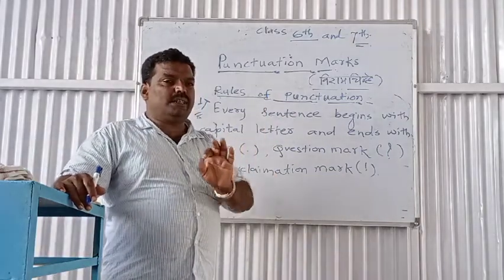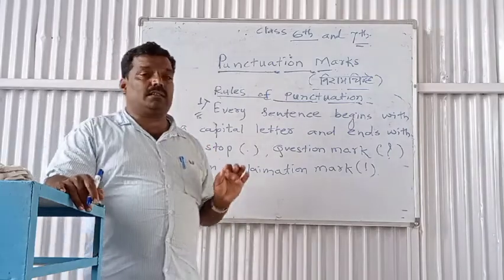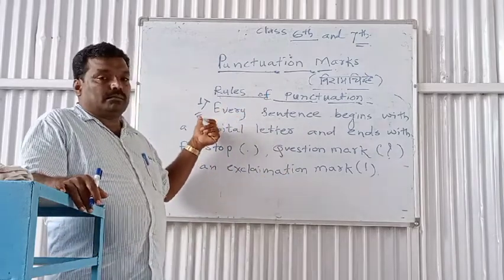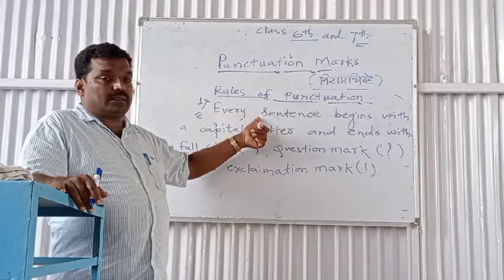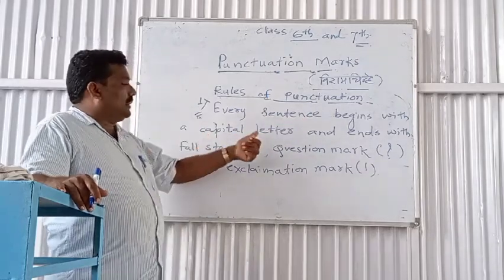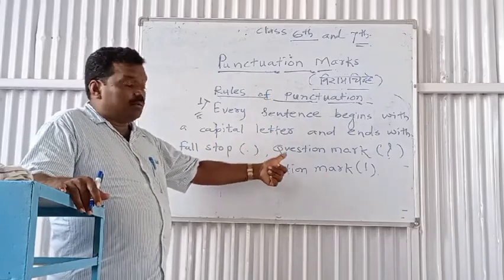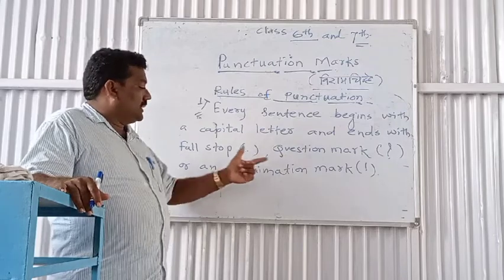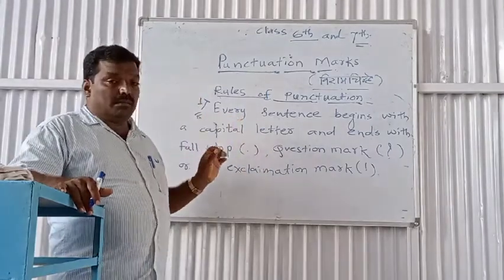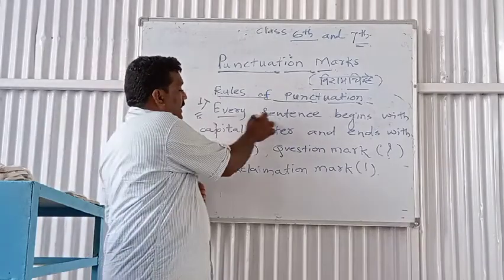Today we are going to learn some basic rules of punctuation. The most important rule of punctuation is: every sentence begins with a capital letter and ends with a full stop, a question mark, or an exclamation mark. This is the basic law of punctuation.